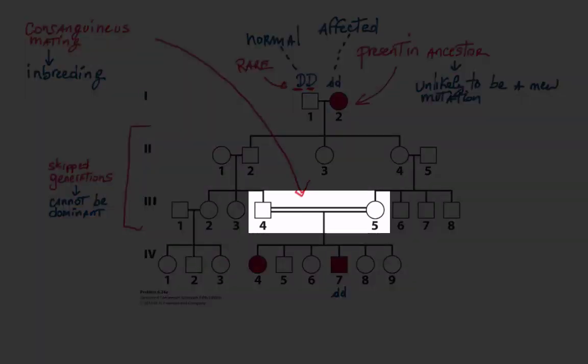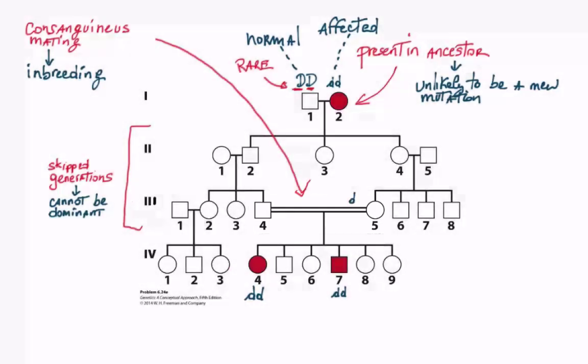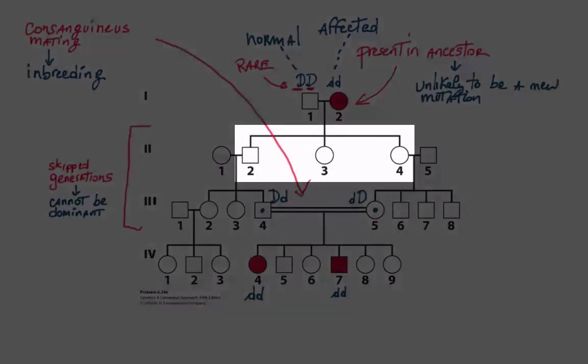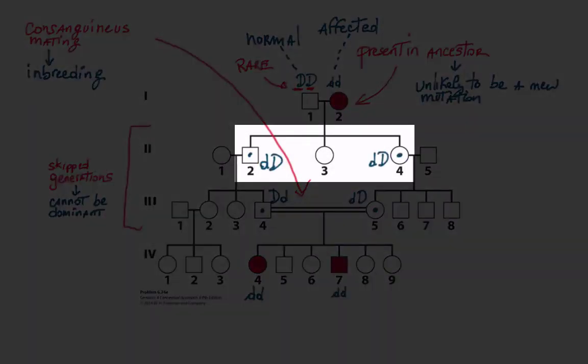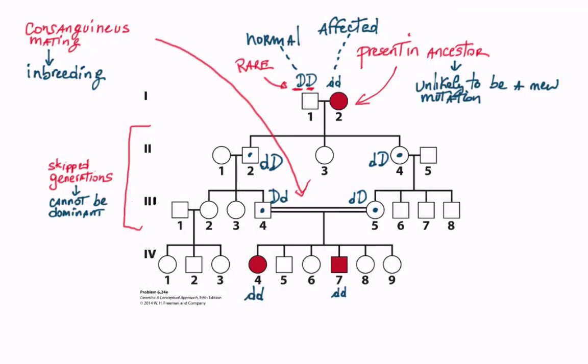The two cousins who married must have been carriers, that is they had big D little d genotype. So did individuals two-two and two-four, following the type of reasoning demonstrated previously. Skipping the details, we can conclude that this is a likely case of autosomal recessive.